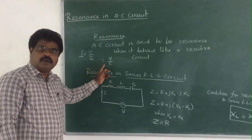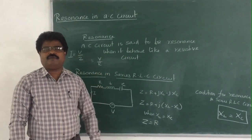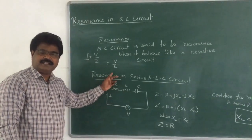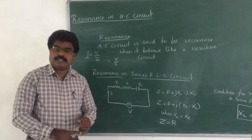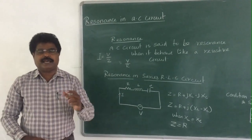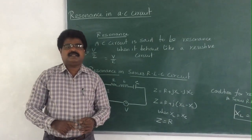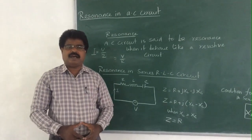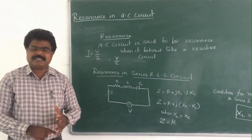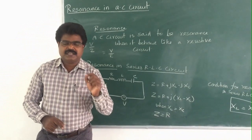At resonance, the current I = V/R (not V/Z), because the circuit behaves like a purely resistive circuit. So the current is maximum at resonance, since R is less than Z. Resonance can be achieved in an AC circuit by varying three parameters: inductance, capacitance, or frequency.